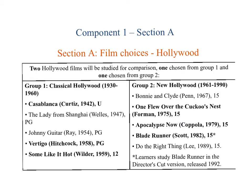Component 1, Section A looks at Hollywood, and we choose two Hollywood films for comparison. One from Group 1, which covers the classical Hollywood period from 1930 to 1960 — Vertigo, a fantastic thriller, and Some Like It Hot, a classic comedy. We would compare those with a film from Group 2, which covers New Hollywood, 1961 to 1990, with One Flew Over the Cuckoo's Nest, Apocalypse Now or Blade Runner as options.